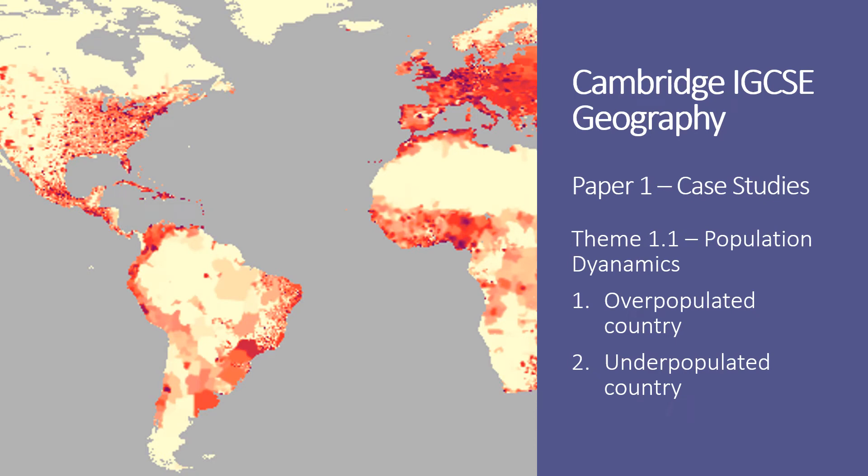In this short video, I'll be taking you through perhaps the hardest aspects of the Cambridge IGCSE geography exam, and that's responding to the seven mark case study responses found in paper one. I'll be taking you through how to respond to the common seven mark responses asked about either an overpopulated or an underpopulated country.